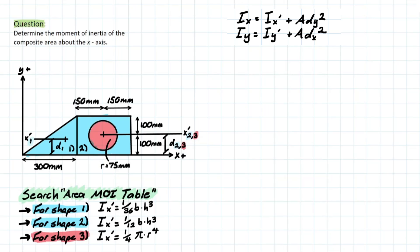We can take a look at our local axes for each of the individual shapes. Local axis 1 refers to the triangular shape, which is a distance d1 away from the global x-axis and is located at the centroid of that triangle. We're going to calculate how far away that centroid is from the global x-axis by finding d1. Similarly, we have the same concepts for shape 2, the rectangle, and shape 3, the circle.